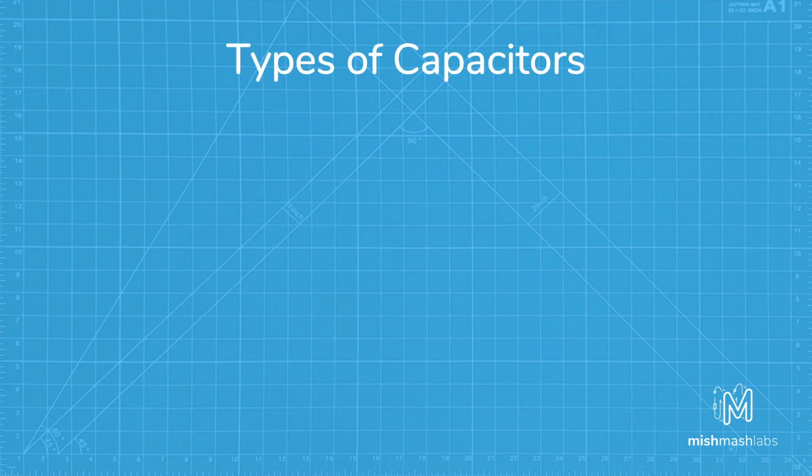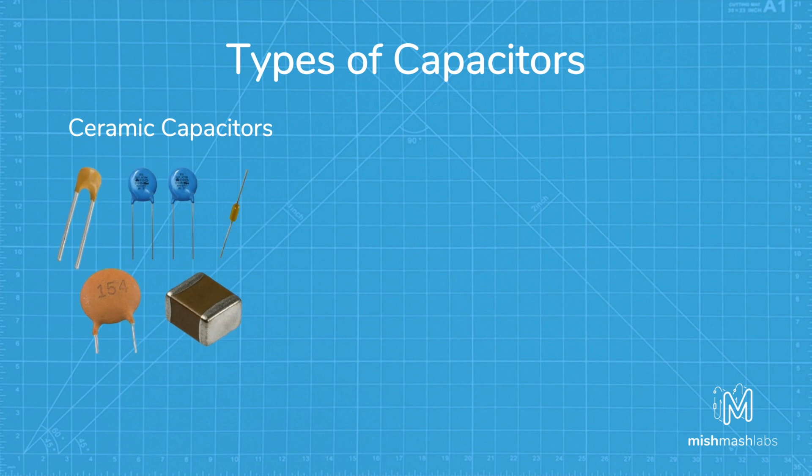The name of the type of capacitor comes from the material from which the dielectric is made. The most common type of capacitor is a ceramic capacitor. These usually have both the smallest capacitance and are the smallest physically sized. They are the least expensive and are well suited to high frequency coupling and decoupling applications.